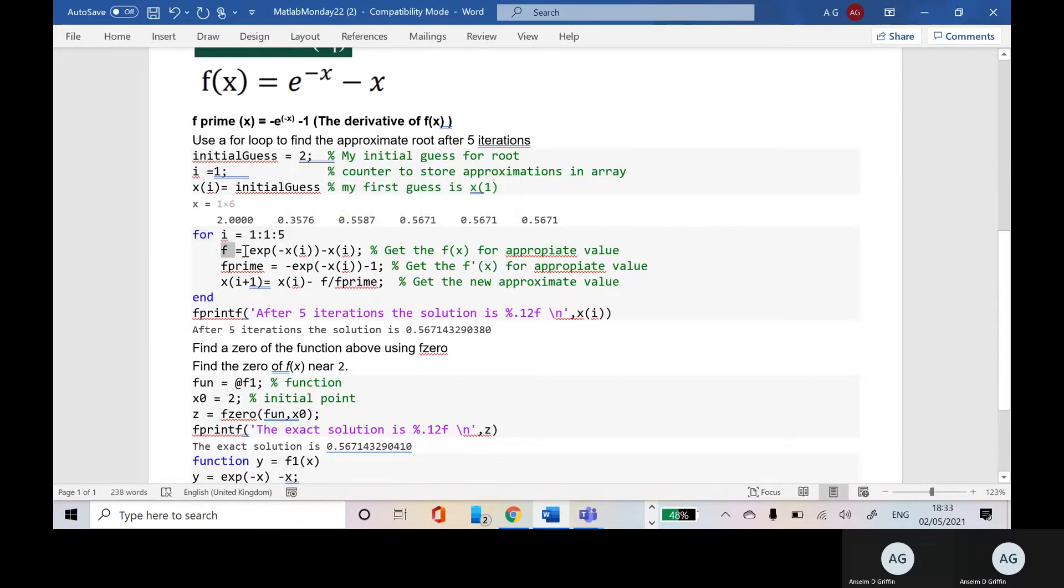So I'm going to go around five times and I will get six values. There's my function f and there's f prime. I think that's OK.